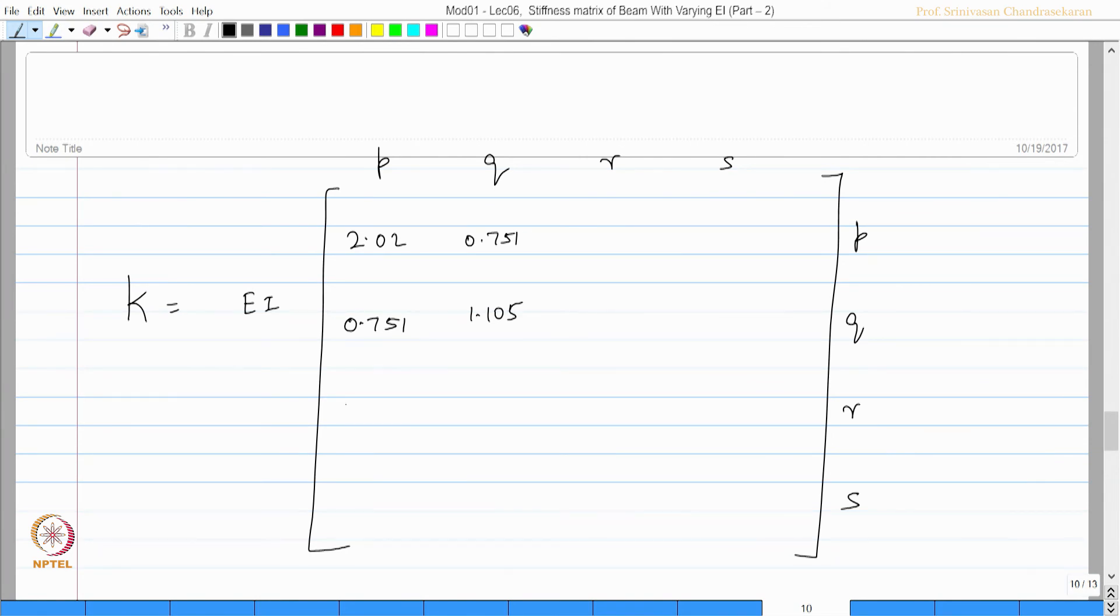Once I know this, I can always find this value as sum of these two by L, which will be 2.02 plus 0.751 by 5, which will be 0.554, and this value will be minus of that. Similarly, this value will be sum of these two by 5, which will be 0.751 plus 1.105 by 5, which comes to be 0.371, and this value is minus 0.371.